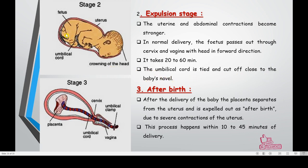The third and last stage is afterbirth. After delivery of the baby, the placenta separates from the uterus and is expelled out as afterbirth due to severe contraction of the uterus. This process happens within 10 to 45 minutes of delivery.